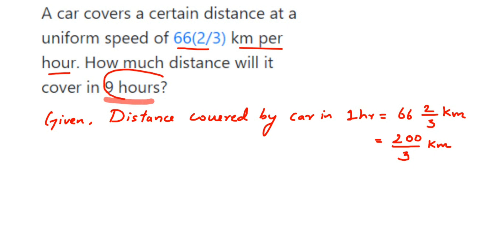Therefore, distance covered in nine hours will be 9 into 200 by 3 kilometers. We can cancel 3 and 9. 3 ones are 3, 3 threes are 9, so we have 3 and 200 in the numerator.